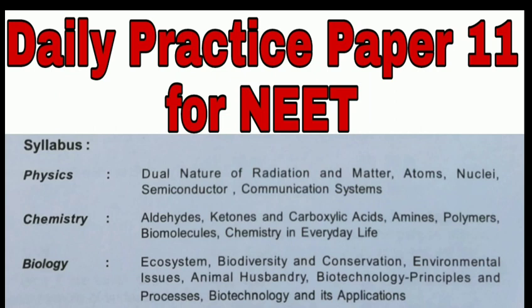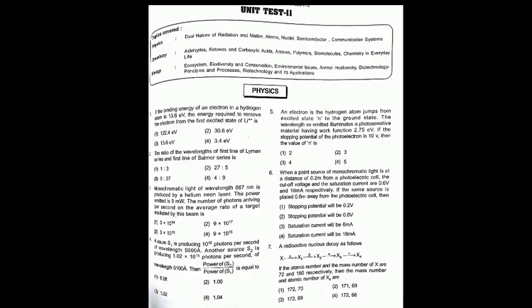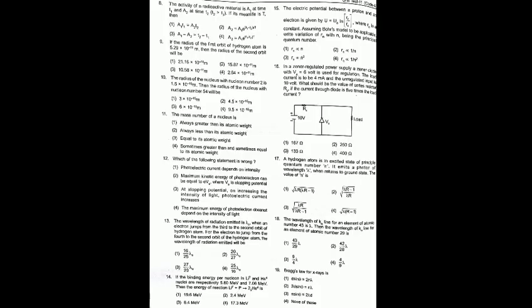In chemistry, it is aldehydes, ketones and carboxylic acids, amines, polymers, biomolecules, and chemistry in everyday life. While in biology, it is ecosystem, biodiversity and conservation, environmental issues, animal husbandry, biotechnology principles and processes, and its applications.